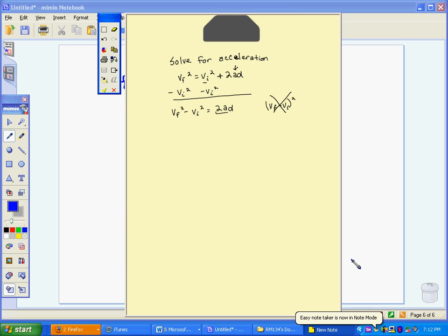Now, we're left with this term where we have 2 times a times d. The way to undo a multiplication is to divide. So if we're solving for a, we're going to divide both sides through by 2 and d. Now, our equation looks like this.